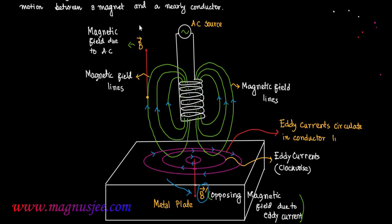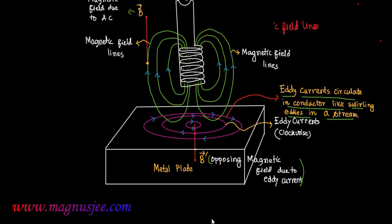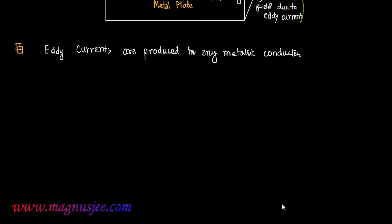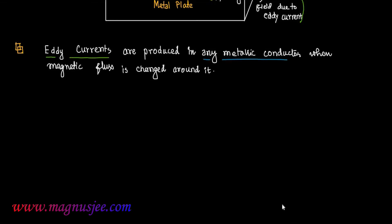Eddy currents circulate in the metal plate or conductor like swirling eddies in a stream. Eddy currents are produced in any metallic conductor when the magnetic flux is changed around it.